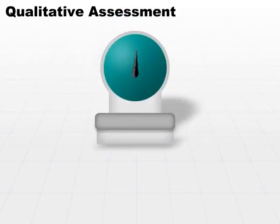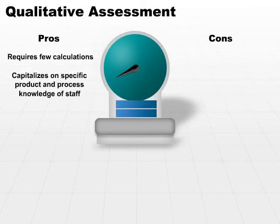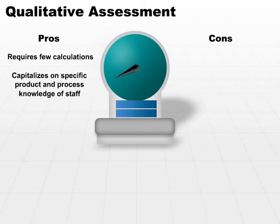Qualitative risk assessment has pros and cons. It requires very few calculations, and it capitalizes on specific product and process knowledge of the staff. What it allows you to do is go to multiple levels in your organization and ask: what do you think is the worst thing that could happen in your department or your particular area? What are the threats that affect you most directly? Chances are, if you ask human resources, accounting, and IT those three questions, you're going to get different answers.